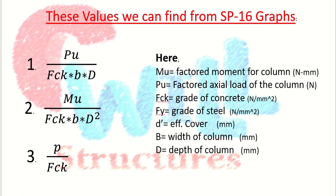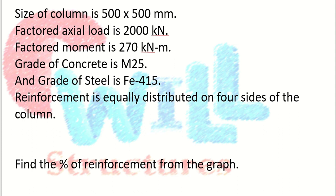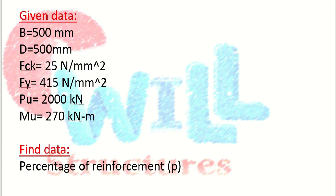Let's read the example. The size of column is 500 × 500 mm. The factored axial load Pu is 2000 kN. The factored moment Mu is 270 kN·m. Grade of concrete is M25, so fck = 25 N/mm². Grade of steel is Fe415, so fy = 415 N/mm². The reinforcement is equally distributed on four sides of the column. We need to find the percentage of reinforcement from the graph.